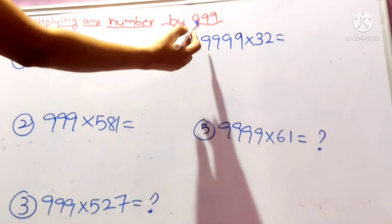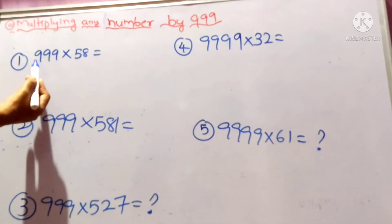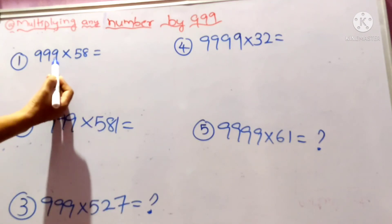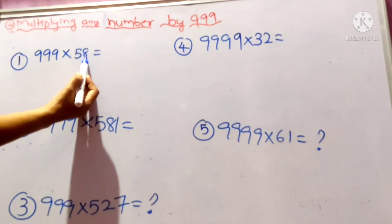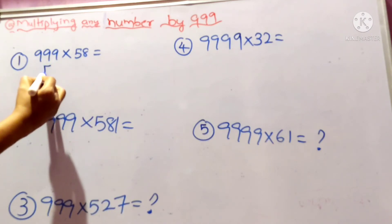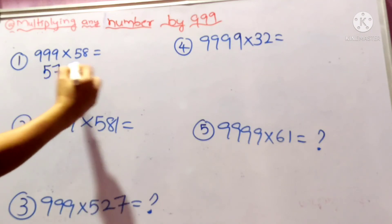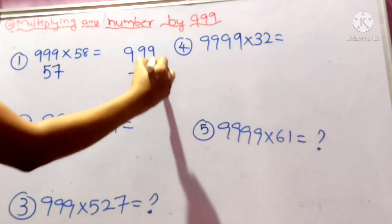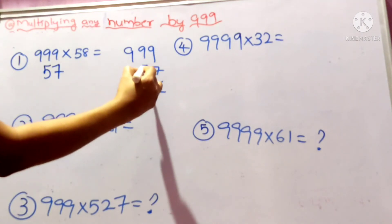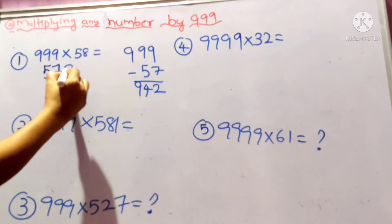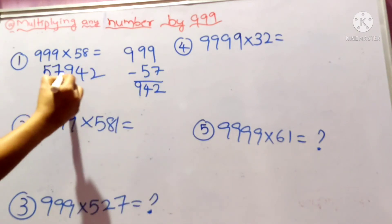Multiplying any number by 999. First question is 999×58. Here, other than 999 is 58. I am taking the number which is less than 58, which is 57. Now subtract this number from 999: 9-7 is 2, 9-5 is 4, and 9. Write this number here, 942. So the answer is 57,942.